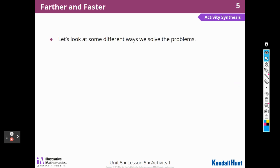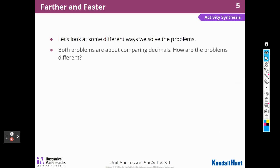Let's look at some different ways we solved the problems. Both problems are about comparing decimals. How are the problems different? The units are different in the two problems — one is meters and the other is seconds. In one problem the winner has a greater number, and in the other problem the winner has the lesser number, because we were looking at time.